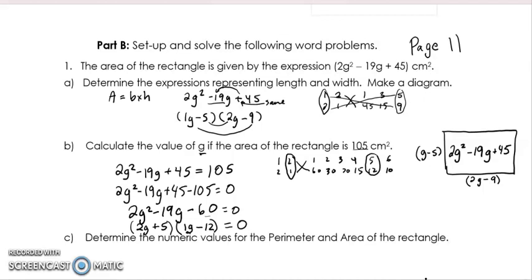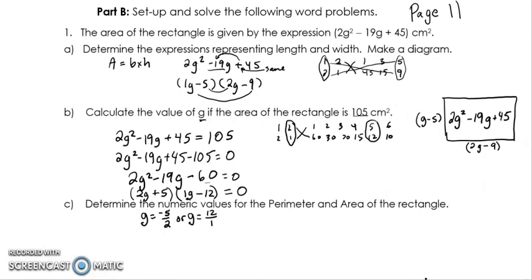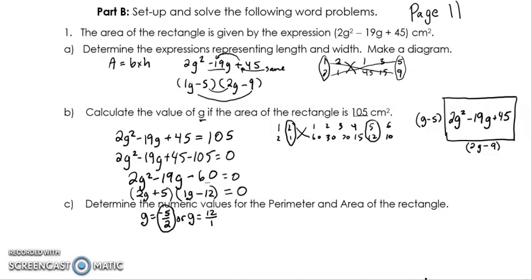If you want to see how that was done in detail, just review the other video. Taking the answers for both brackets: g is equal to the opposite of 5 over 2, and g is equal to the opposite of negative 12, which is positive 12 — so just simply 12. One of these answers is not going to make any sense. If you have negative 5 over 2, which is negative 2.5, it's going to give a negative height for my rectangle. So when doing these application questions, you usually have to throw out the negative solution. My answer is g is equal to 12.